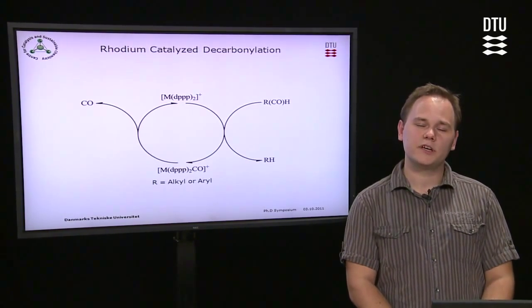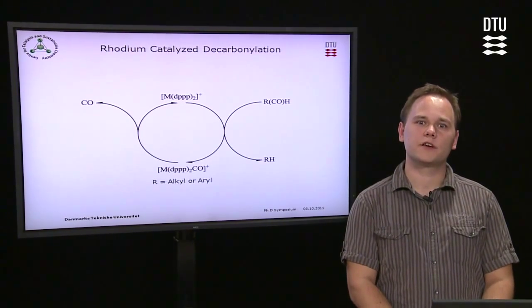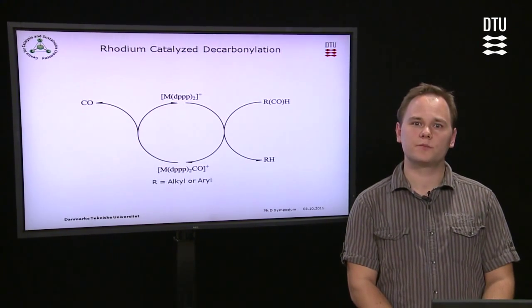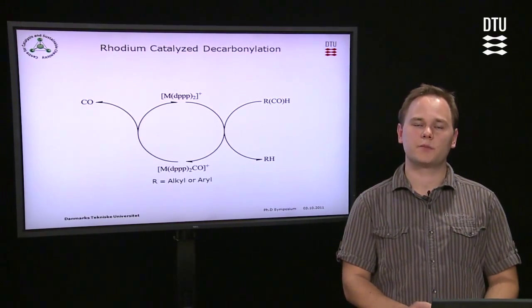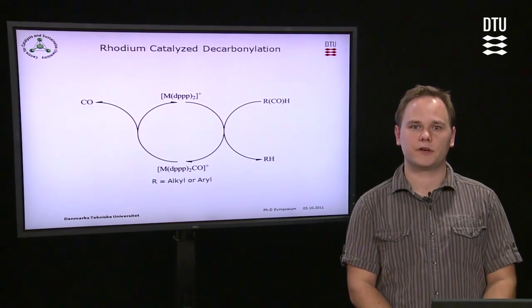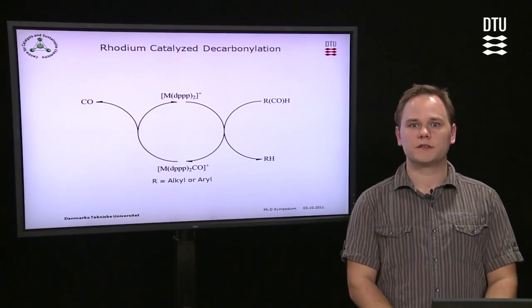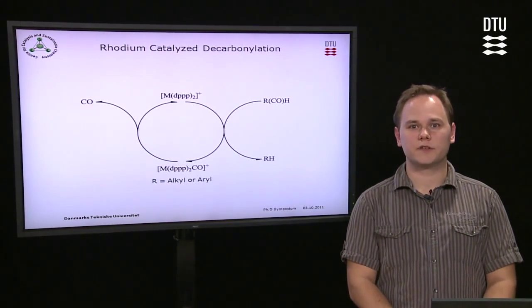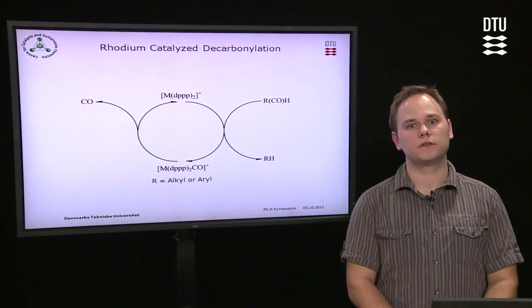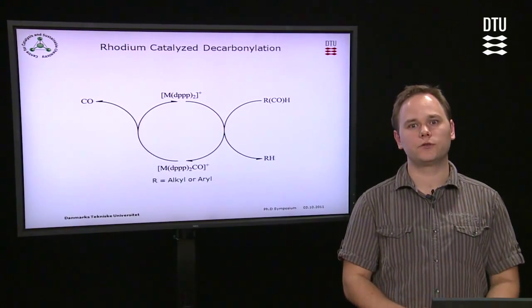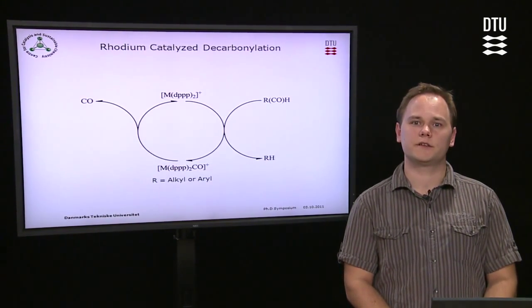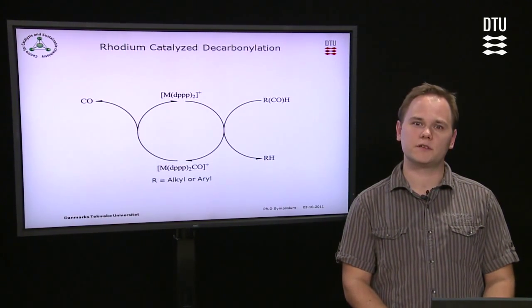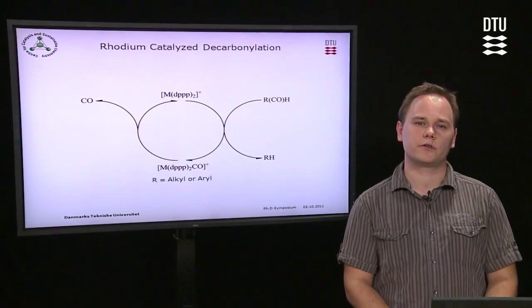The decarbonylation reaction is done using a rhodium bisTPPP complex, which is a bidentate phosphine. This is fairly simply synthesized and easily reused, and you can regenerate the catalyst up until 10 or 12 cycles.